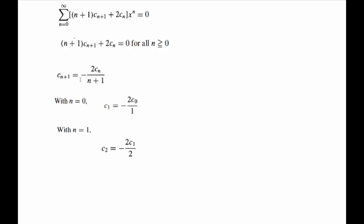Now with n equals 1, of course we'll end up with c₂, and that's going to be equal to minus 2—n is 1—so c₁ over 2. Now look, we already know what c₁ is, so we will substitute the value of c₁ in here.